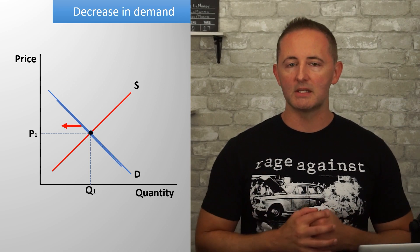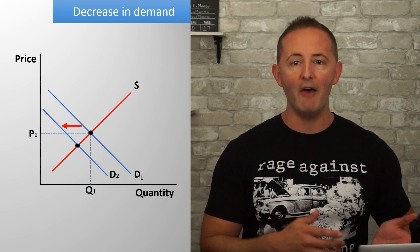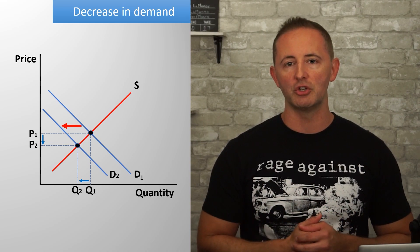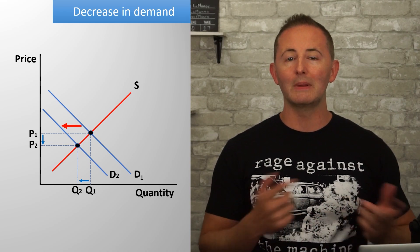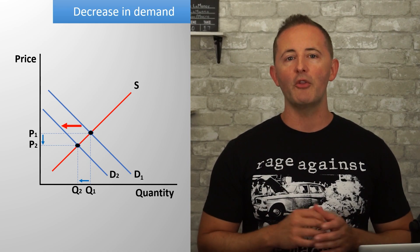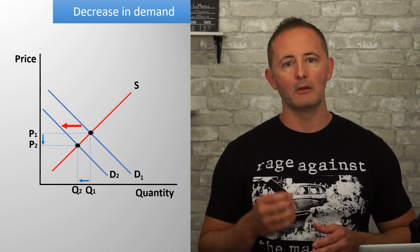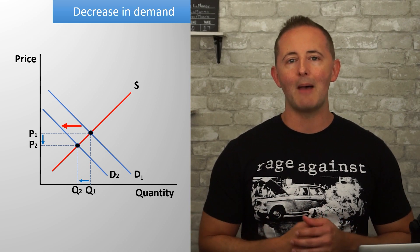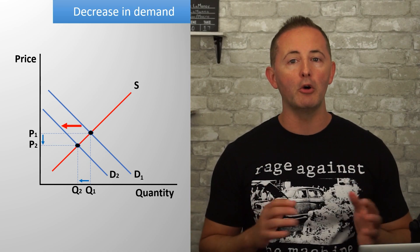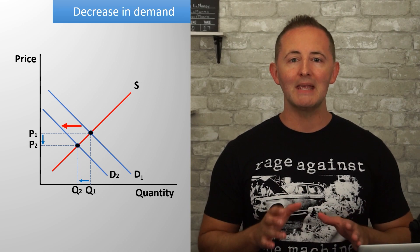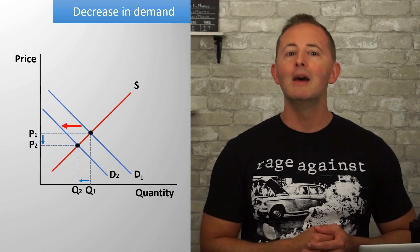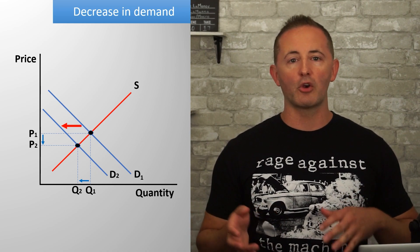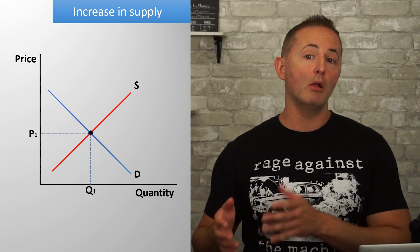What if demand decreased? A decrease means it shifts left. So we draw our new demand curve D2 to the left of the original, relabel the first demand curve as D1, and draw the arrow pointing left. We draw dotted lines out to each axis and indicate what's happened to price and quantity — they've both decreased. The nice thing about demand shifts is that whatever happens to demand, the same thing happens to both price and quantity: they either all increase or they all decrease.